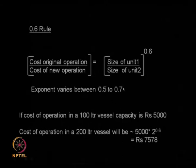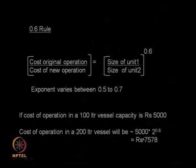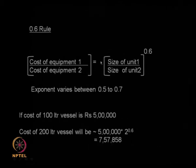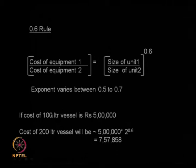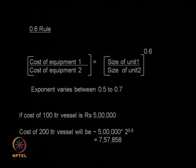It says you cannot simply multiply by 2 just because the vessel size doubled from 100 to 200 litres — it will be less than that. The same 0.6 rule can also be used for getting the price of equipment. Cost of equipment 1 to cost of equipment 2 equals size of equipment 1 to size of equipment 2, raised to the power 0.6. So if a 100 litre vessel costs 5 lakh rupees, a 200 litre vessel will not cost 10 lakh rupees but 2 raised to the power 0.6 times 5 lakhs, which is approximately 7.57 lakh rupees.